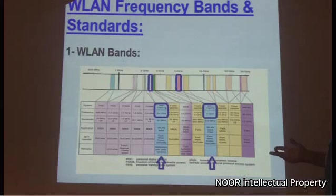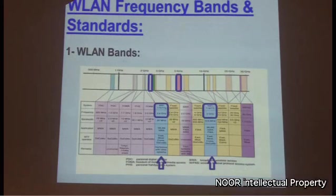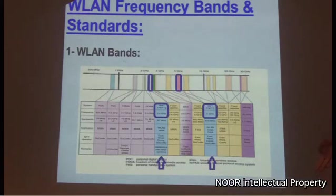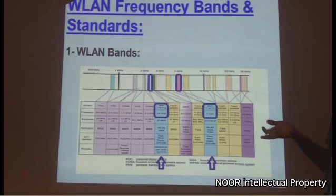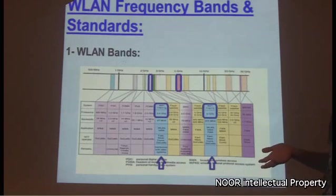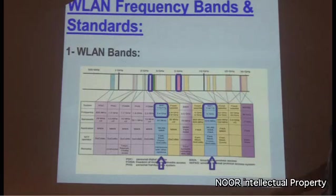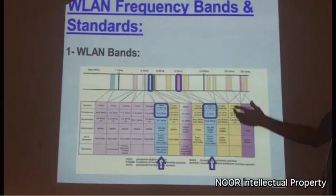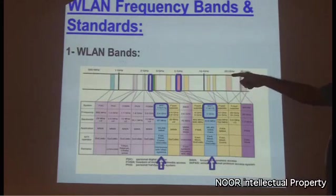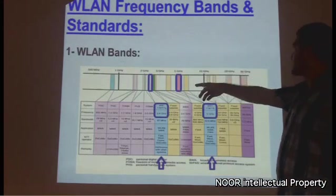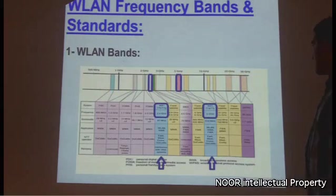Next, we will discuss WLAN frequency bands. There are three bands available for transmitting wireless signals. The first, 900 MHz, is reserved for mobile communication and is not available for WLAN use. So we can only use two bands: the 2.4 GHz band and the 5 GHz band.